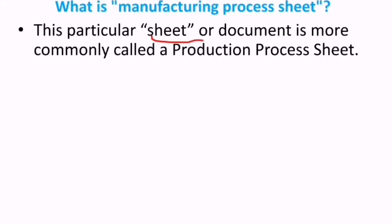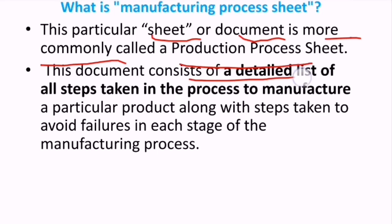This document is more commonly called a production process sheet. It consists of a detailed list of all steps in the process to manufacture a particular product, along with steps to avoid failures in each stage of the manufacturing process.